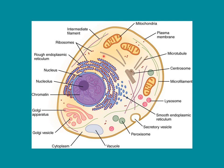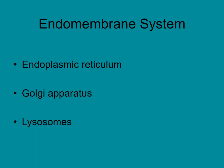Each organelle has its own specific job. In some ways it's like your house: the nucleus is the control center, like the person in charge of the household. Different organelles have different purposes and different environments, just as a kitchen is different from a family room because they have different purposes. The organelles' specialized environments allow the cell to carry out particular functions more efficiently.